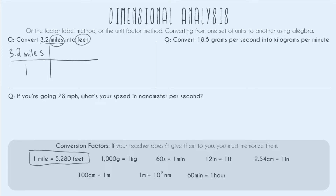Our goal is to cancel out miles and end up in feet. To do that, we're going to write miles on the denominator, because writing it down there allows us to cancel out the miles on top — that's just how we cancel in algebra. Next, we add feet in the spot that remains, which in this case is on top. Now we plug in the numbers associated with each unit: next to mile we have the number 1, and for feet we have 5,280. Now that our conversion factor is correctly plugged in, we can cancel out miles and end up in feet.